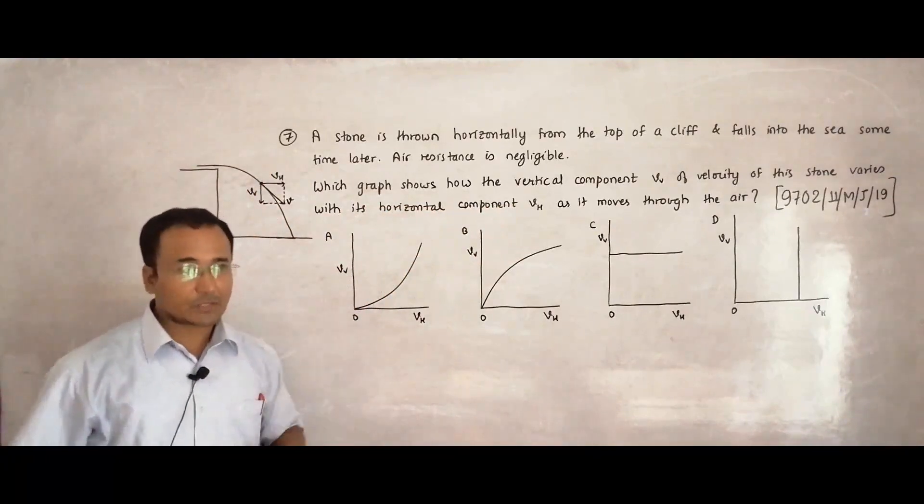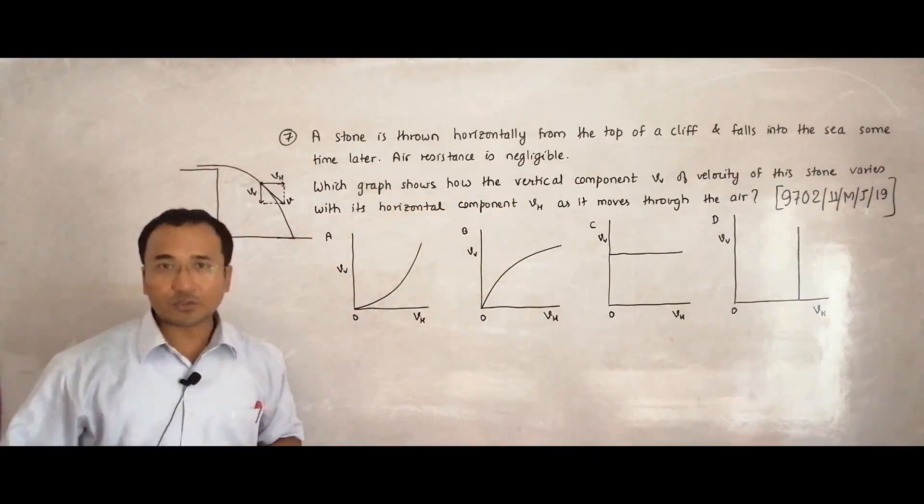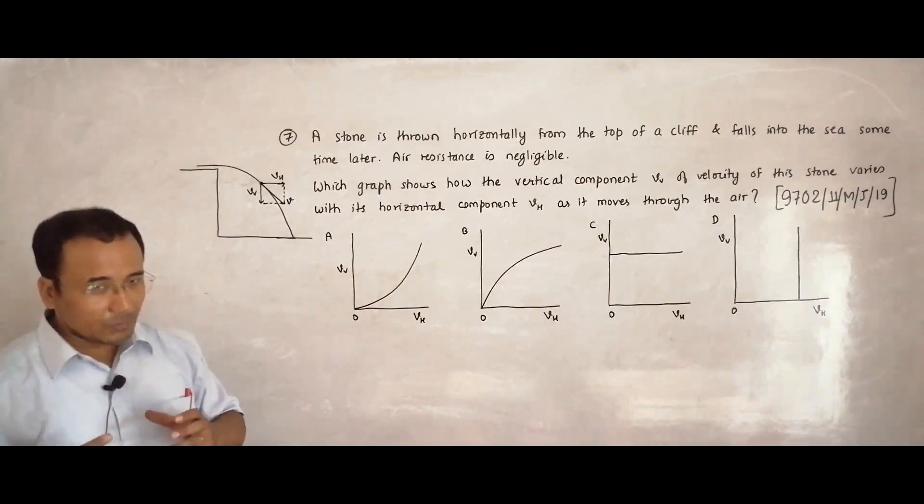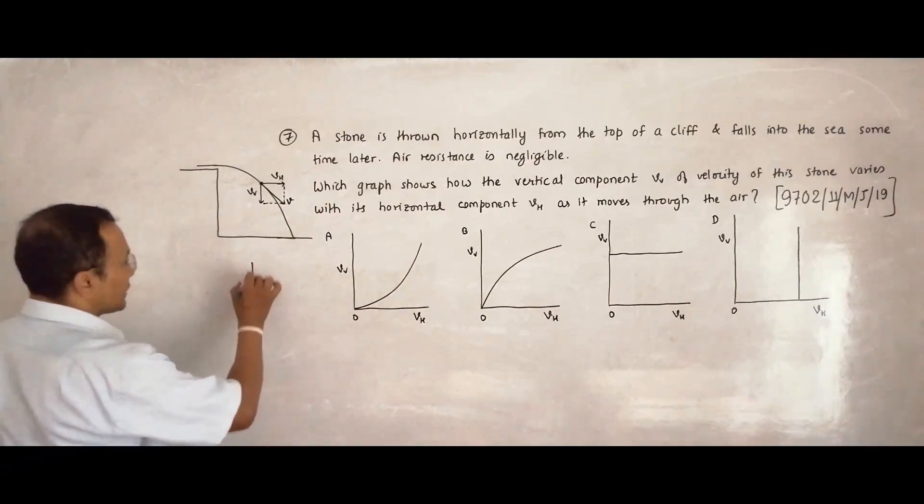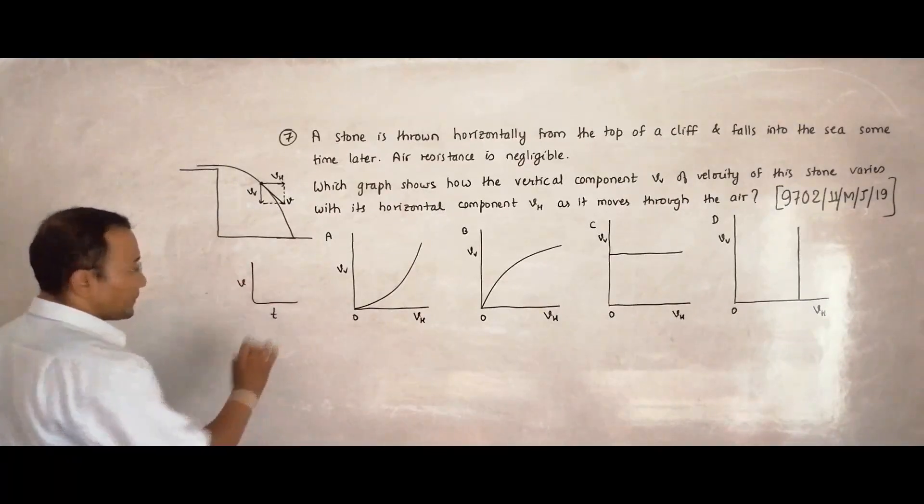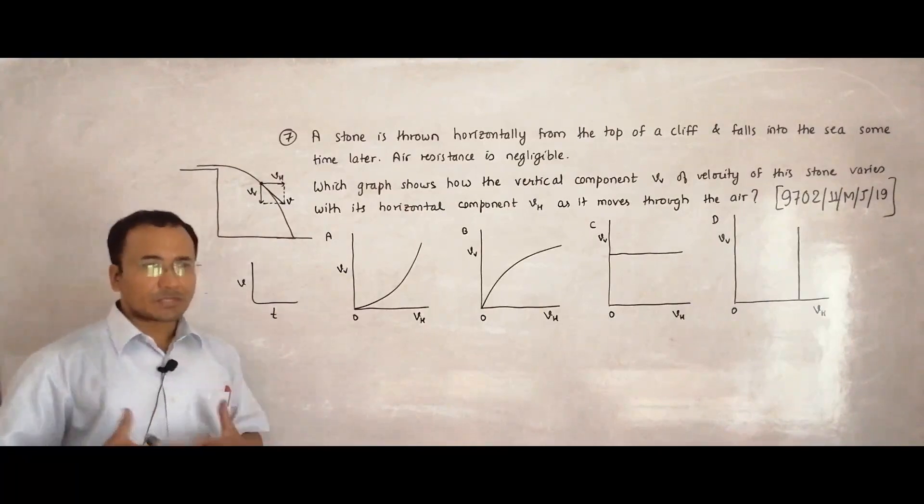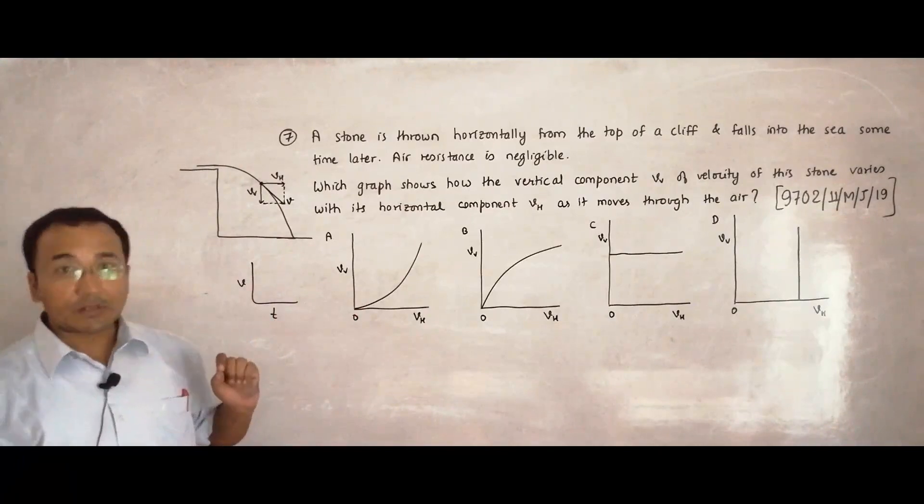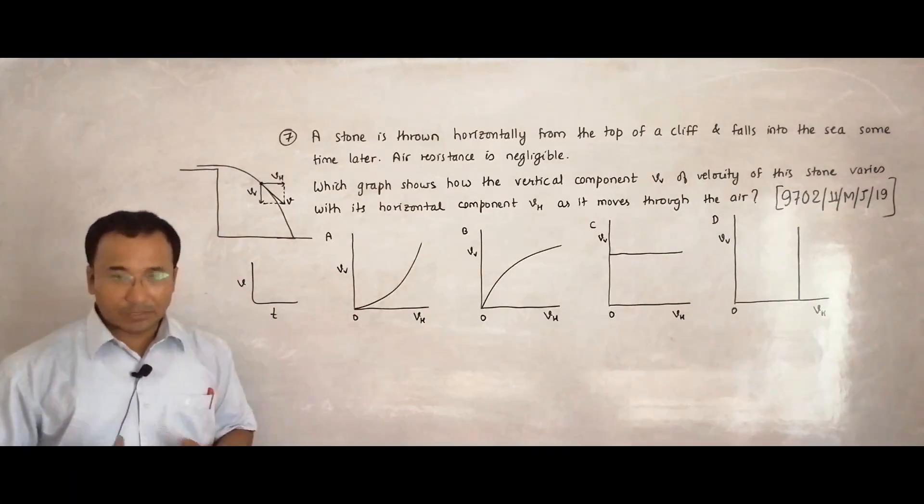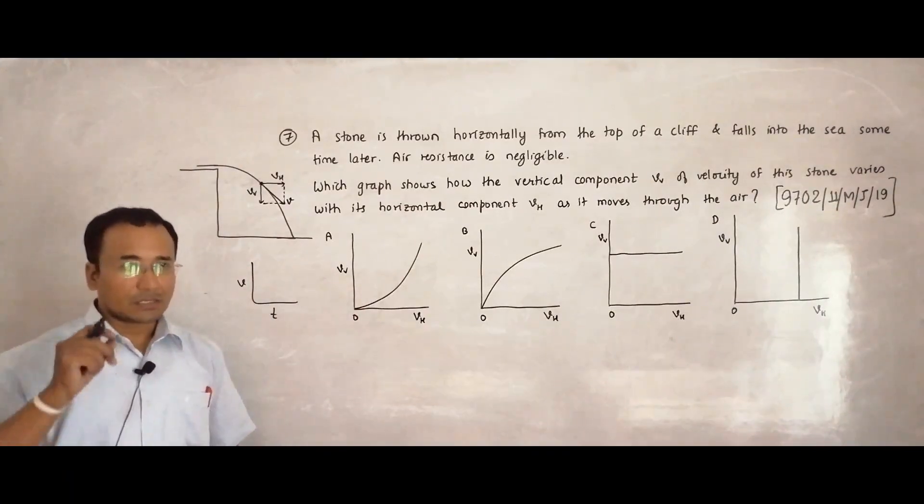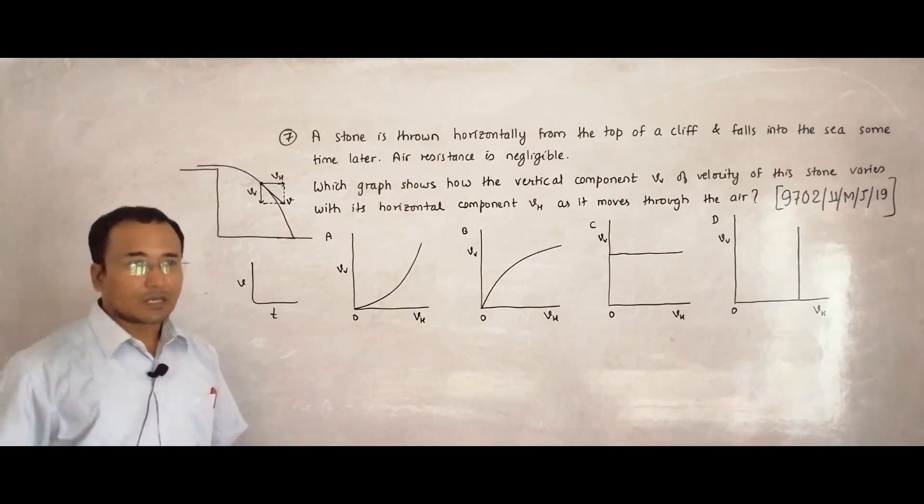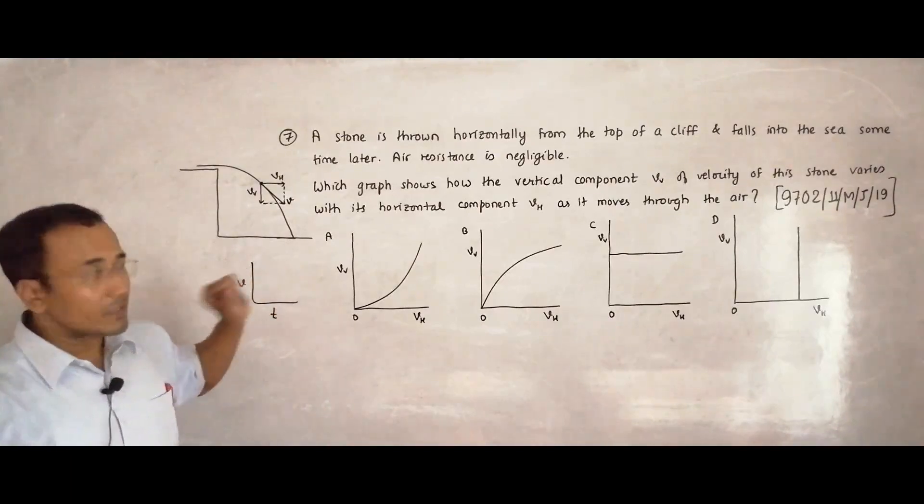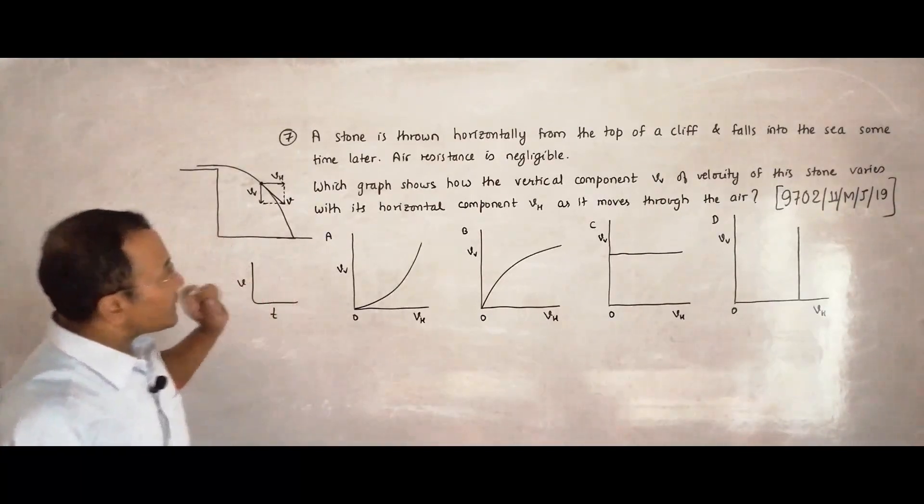So we have to find which graph shows how the vertical component VV of the velocity of this stone varies with its horizontal component. So we have a comparison of this velocity with this velocity. So this time the graph is different. So that's why I think many of our students, they must have faltered in this question. Because they have the habit of doing the graph of anything with respect to time.